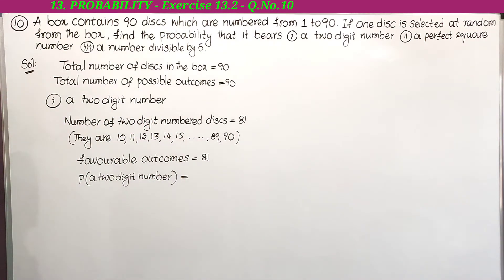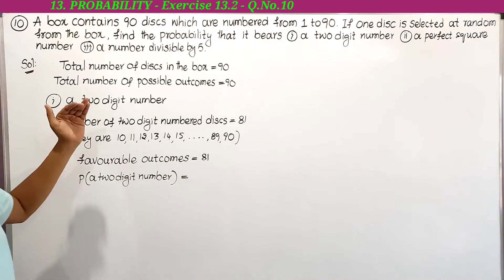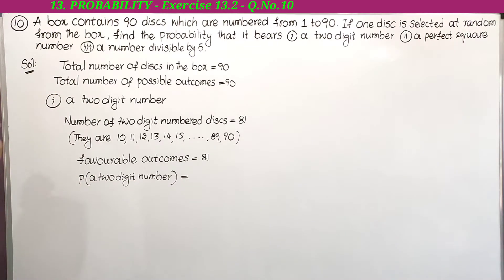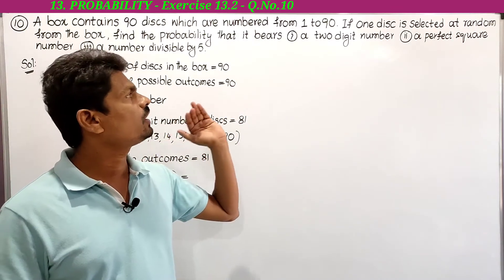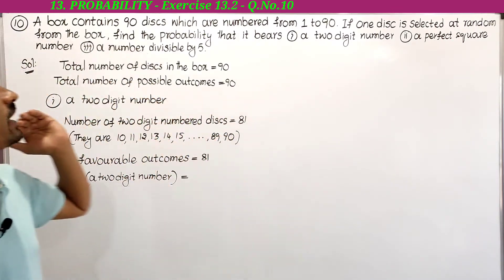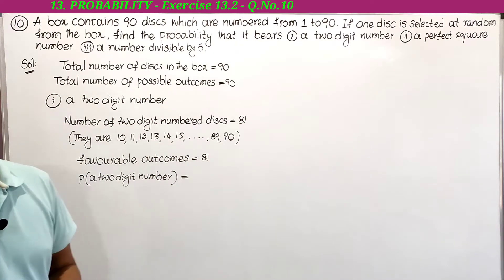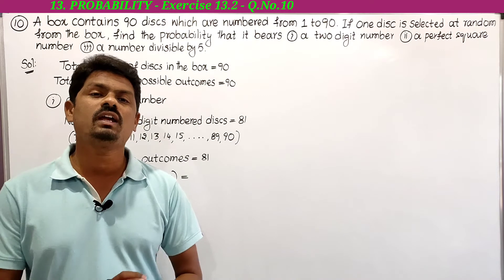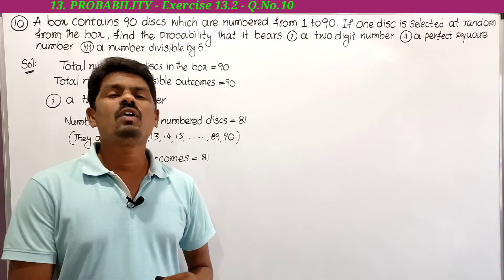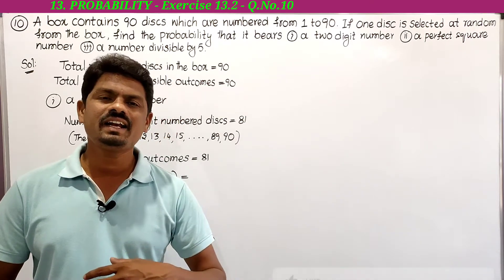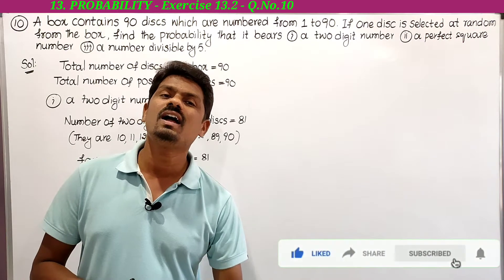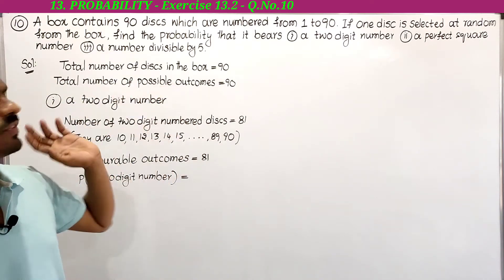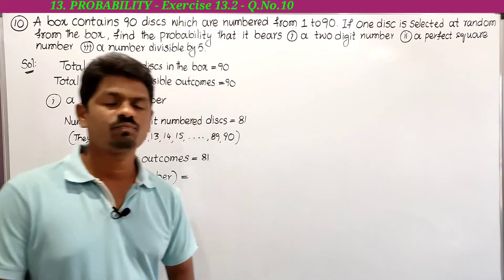See here what is being asked: a box contains 90 discs which are numbered from 1 to 90. If one disc is selected at random from the box, find the probability that it bears: number one — a two-digit number; number two — a perfect square number; number three — a number divisible by five.